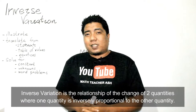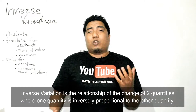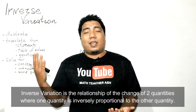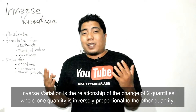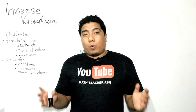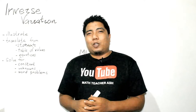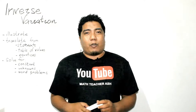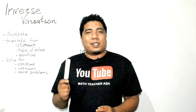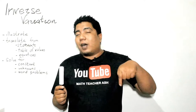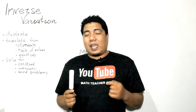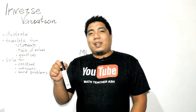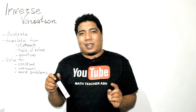We have already discussed the direct variation, which talks about the relationship where when one quantity increases, the other one increases. However, in the inverse variation, we will be talking about the opposite. Therefore, if one quantity increases, then the other quantity decreases. And if the other quantity decreases, its counterpart will increase.